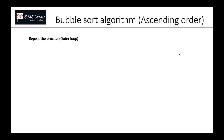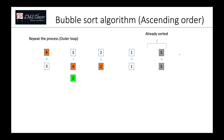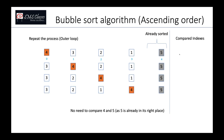We need to repeat this process to sort all elements. Starting from the beginning again: four is greater than three — swap; four is greater than two — swap; four is greater than one — swap. We stop before comparing four and five because five is already sorted. This time we only needed three iterations instead of four.